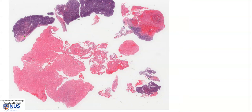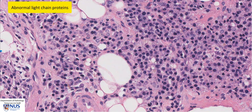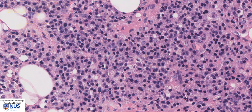Moving to another area which is a little bit thinner, we can perhaps appreciate the plasma cell morphology a little bit better in this instance. Plasma cell neoplasms can produce abnormal light-chain proteins, and in some instances this can give rise to amyloid deposition, which is an insoluble extracellular protein. In some cases of multiple myeloma, some of these patients may have organ damage due to amyloidosis.